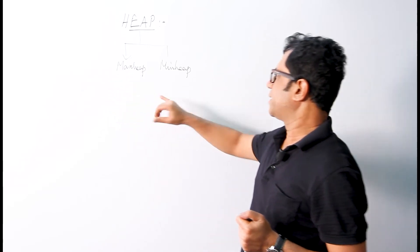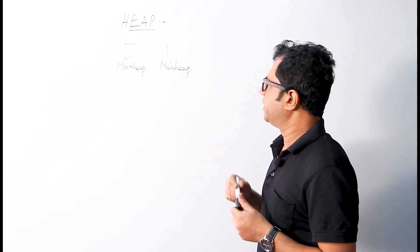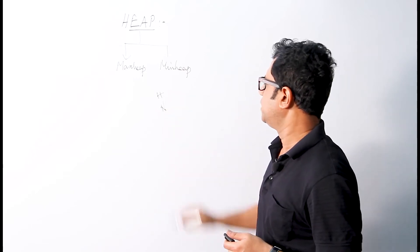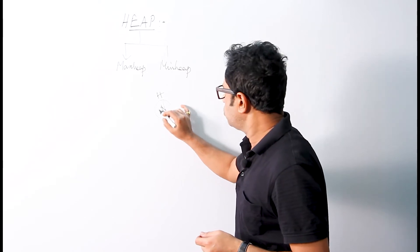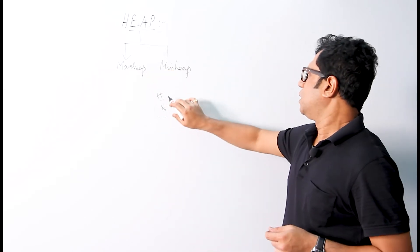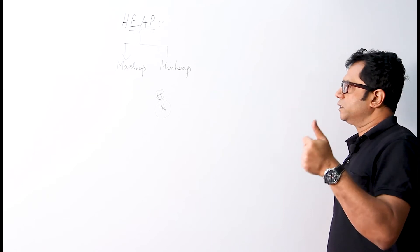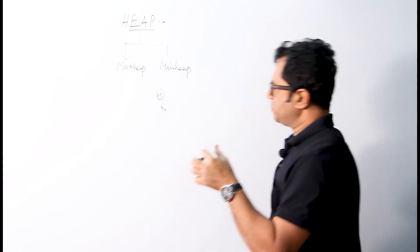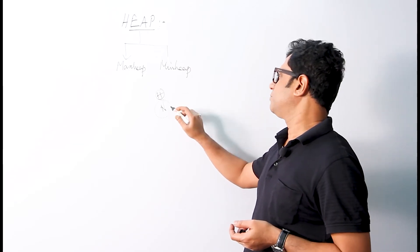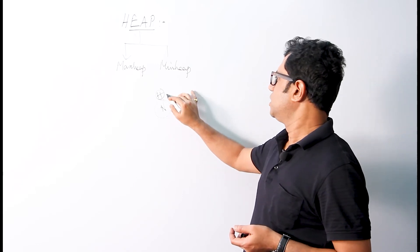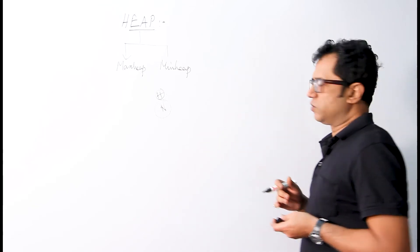What is a Max Heap? Suppose the heap is called H and has some nodes in it, and each node can be considered to be N. Any heap H is a Max Heap if each node N of the heap H always has a value greater than or equal to the values of its child nodes.